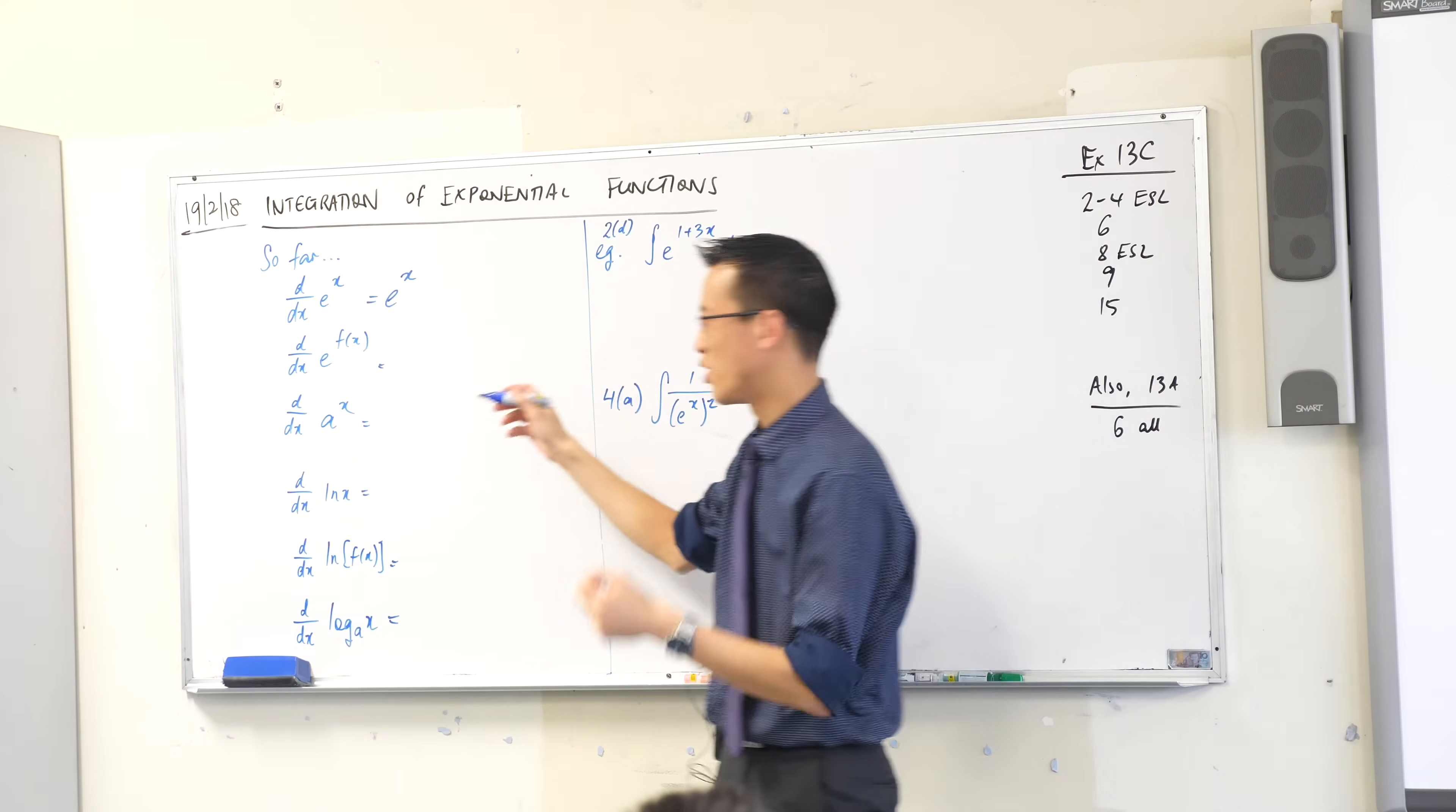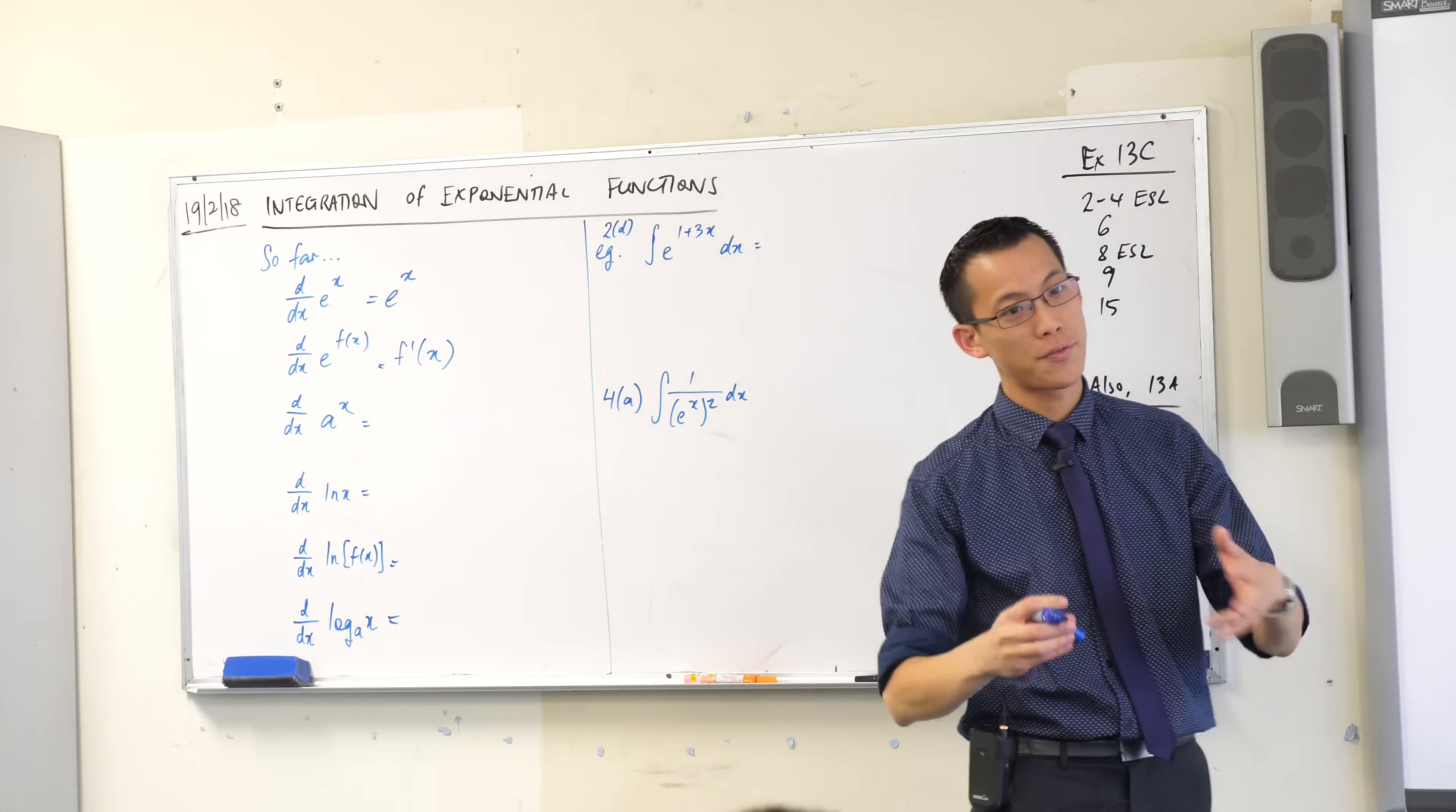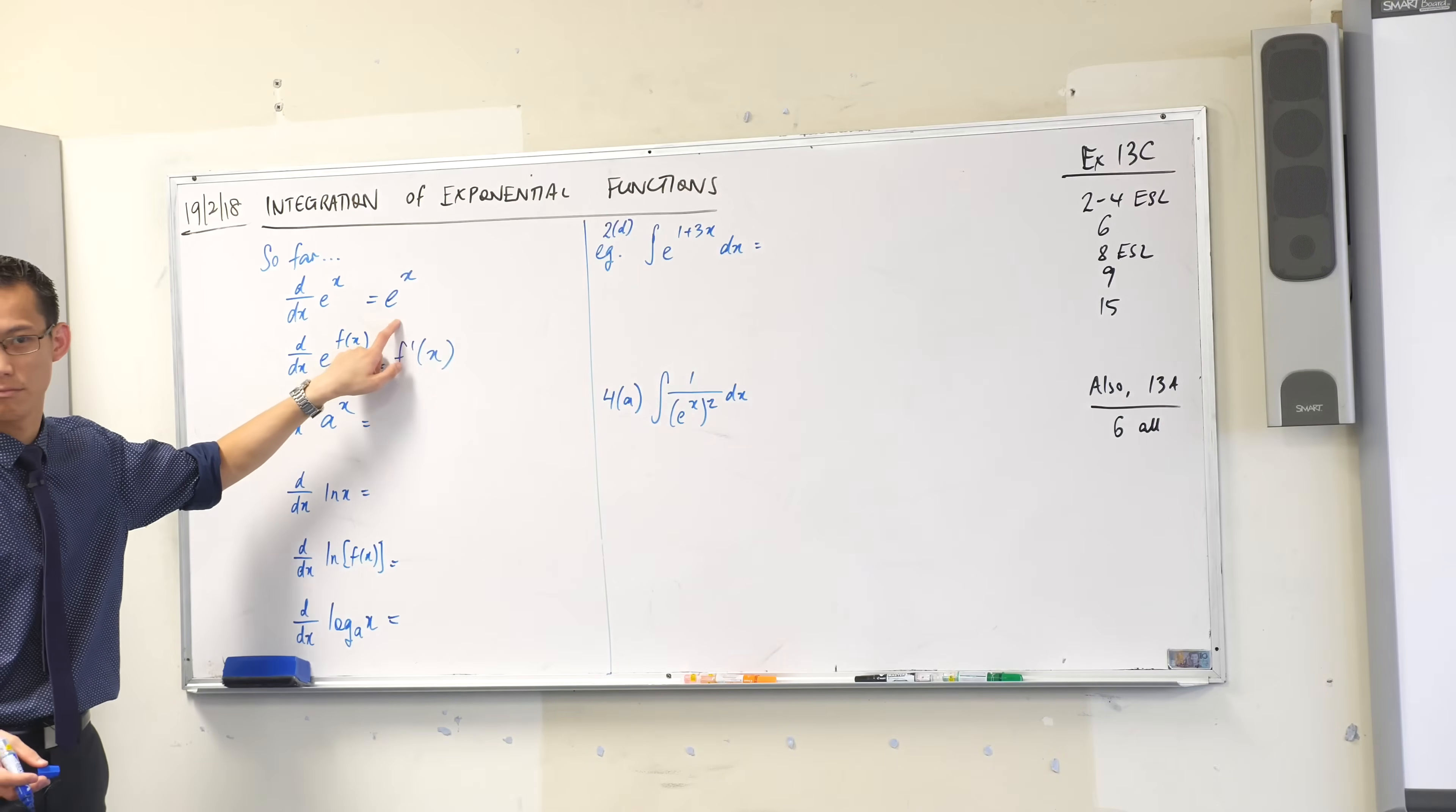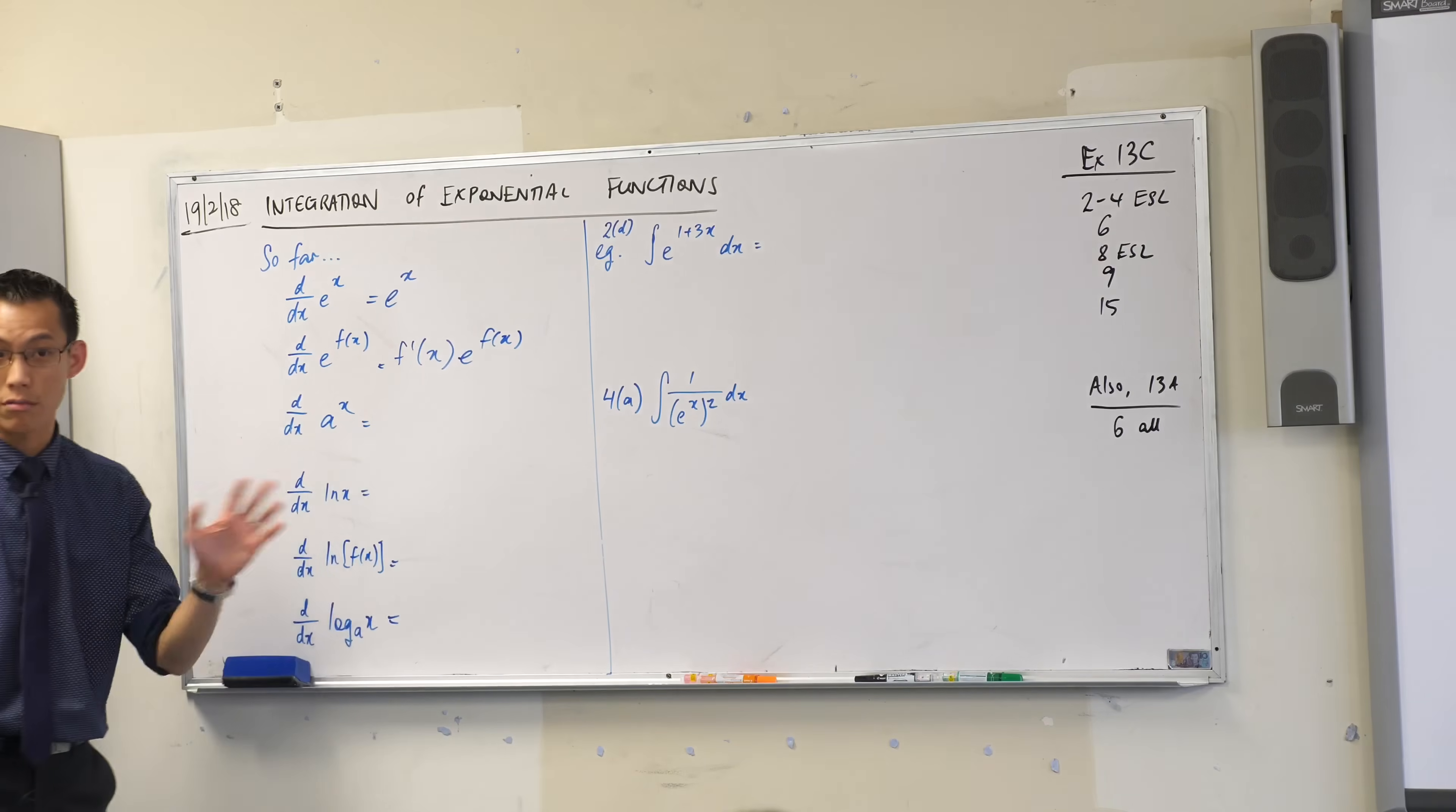So what would we call the derivative of the inside function in this case? Just call it f dash. There's the inside, when you differentiate the outside, it's an exponential. What happens when you differentiate an exponential function? Nothing happens, so you just get back what you started with.